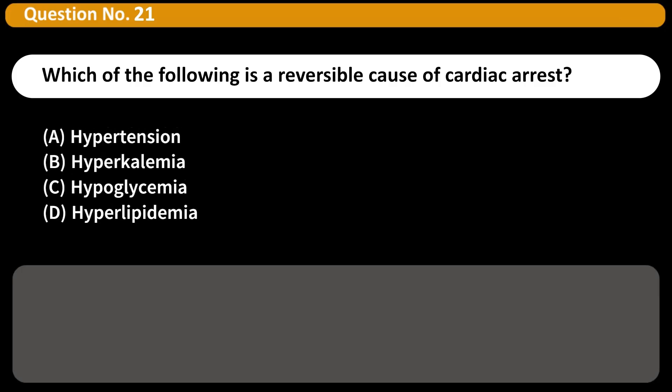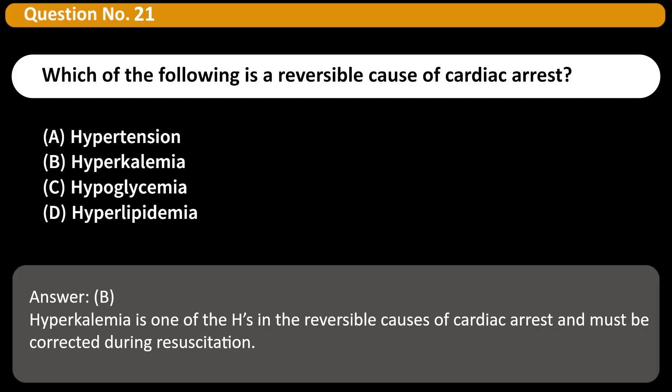Which of the following is a reversible cause of cardiac arrest? A. Hypertension. B. Hyperkalemia. C. Hypoglycemia. D. Hyperlipidemia. Answer: B. Hyperkalemia is one of the H's in the reversible causes of cardiac arrest and must be corrected during resuscitation.